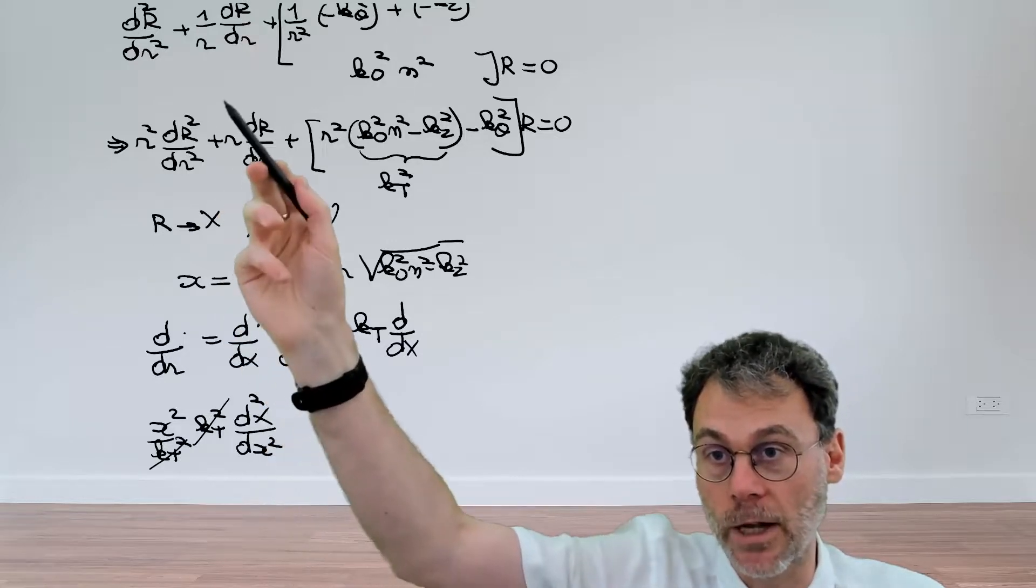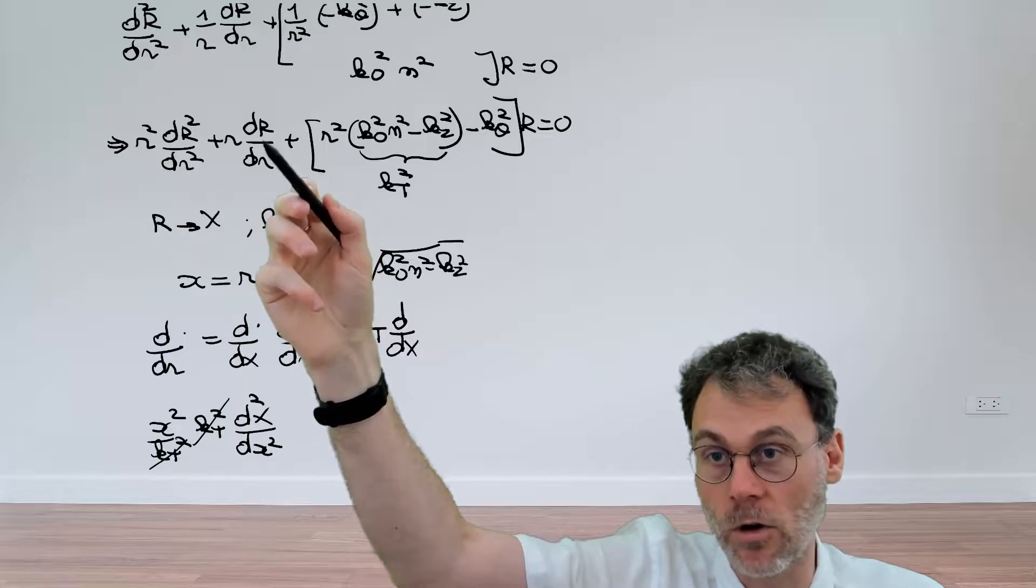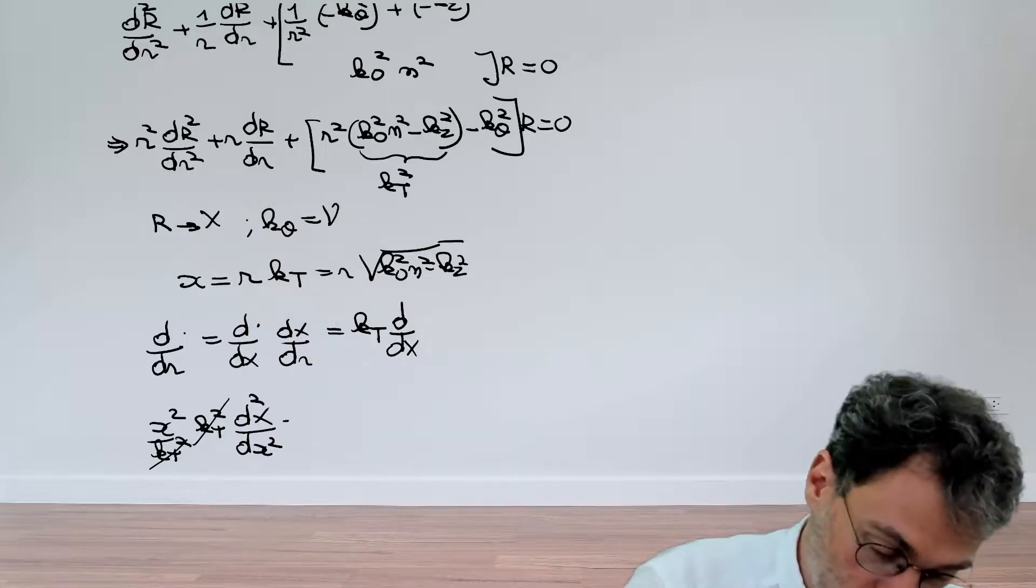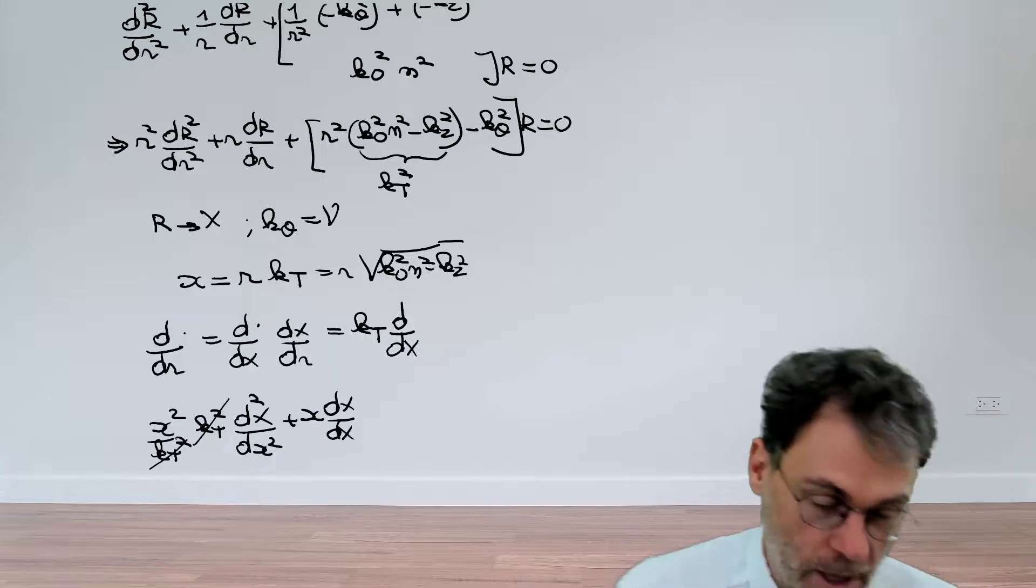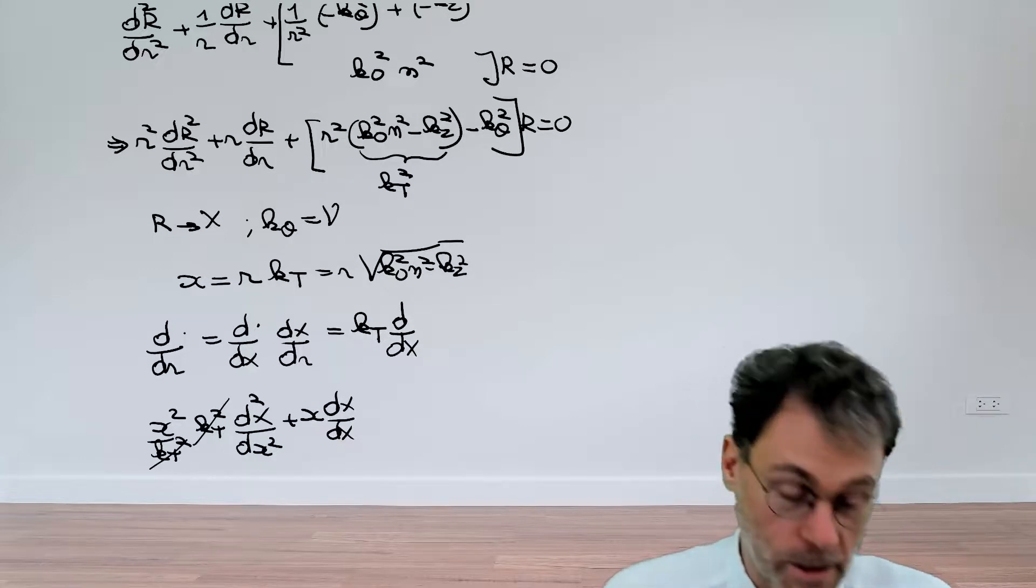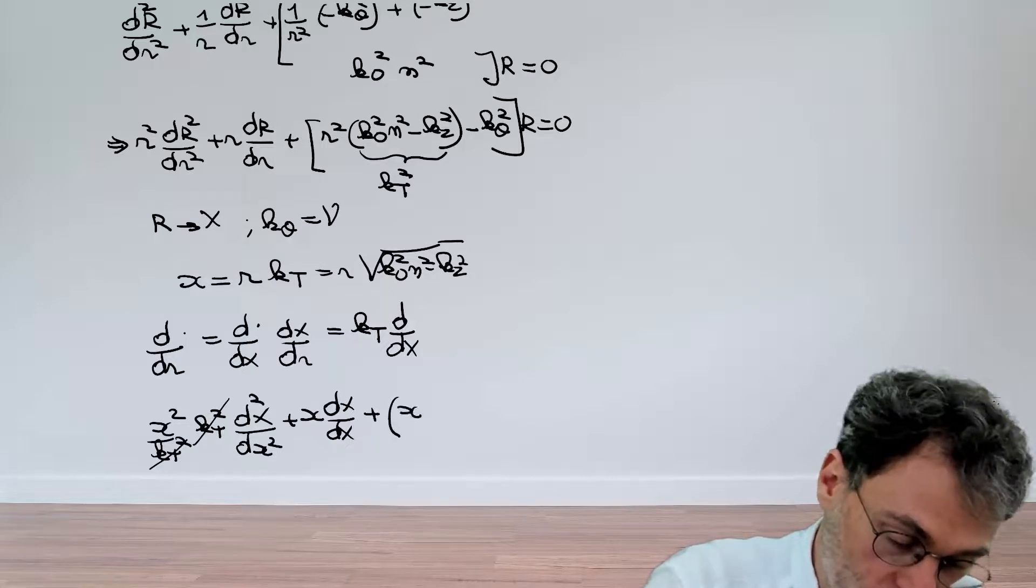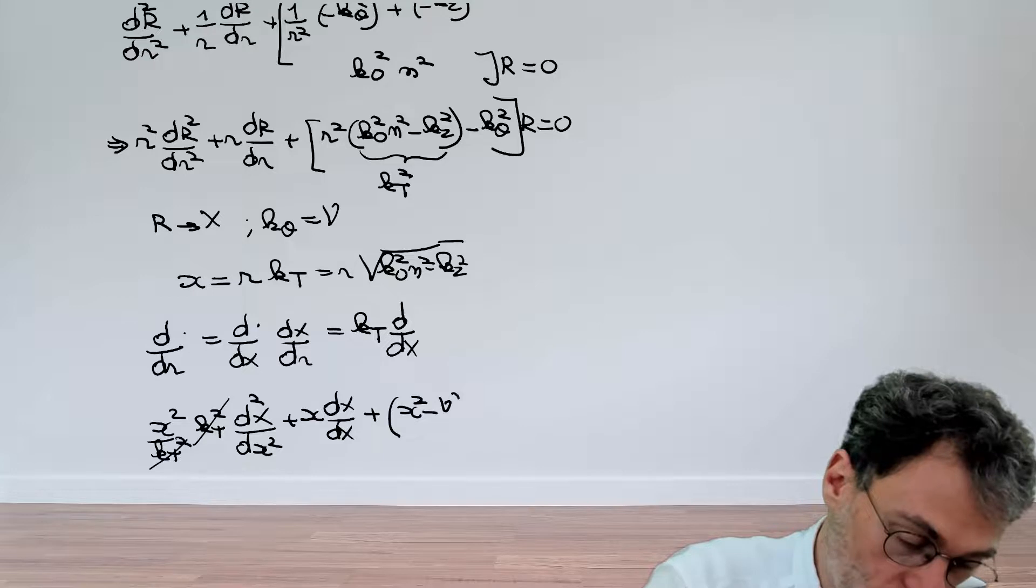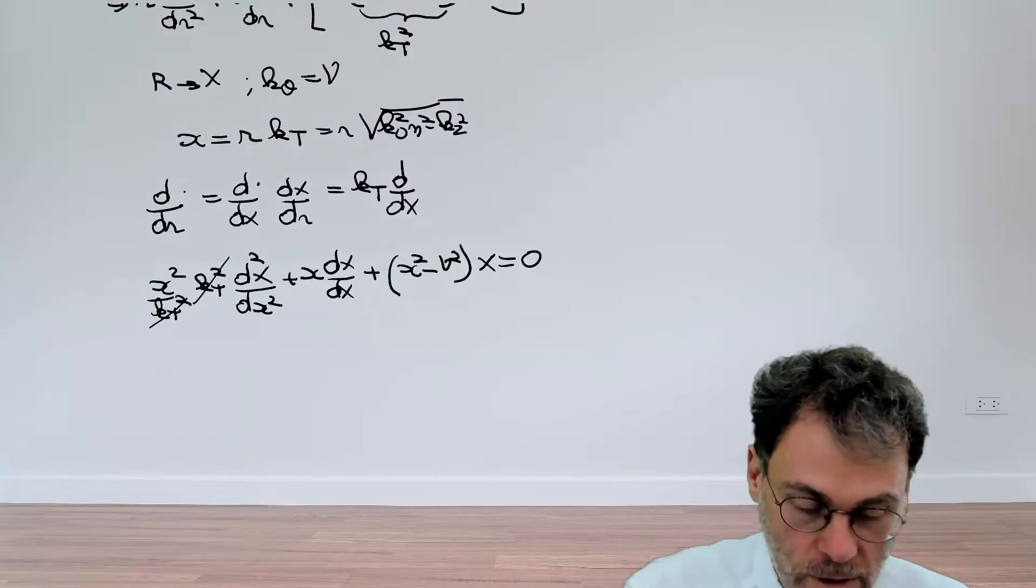Same thing happens for that term. We will have a kt coming from this part and a kt coming from that part. They will cancel and we have x dx/dx. And then finally we just have this becomes x² minus ν² times x equal to zero.